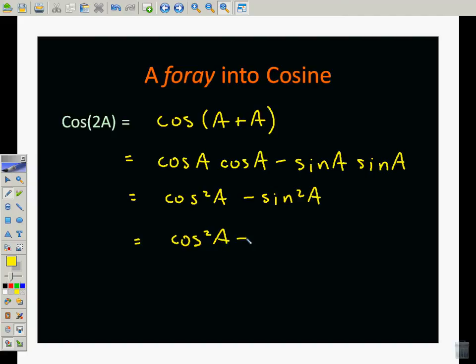Using the Pythagorean identity to substitute, we end up with 2 cosine squared of A minus 1. So we have two different forms now. Here's one, and here's another.